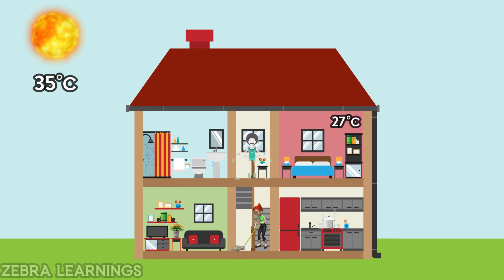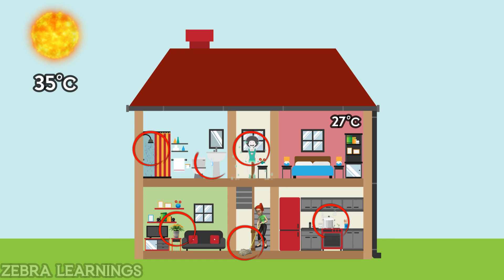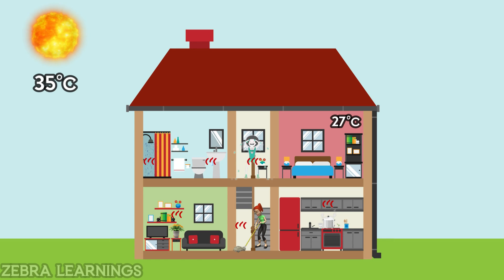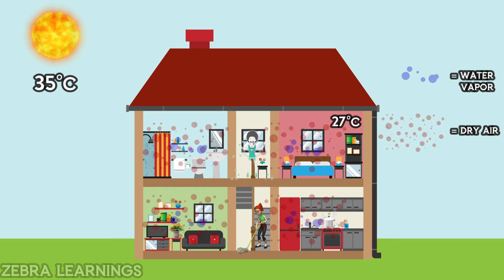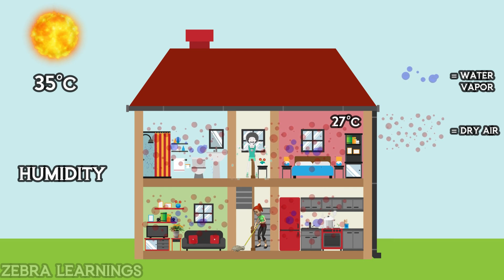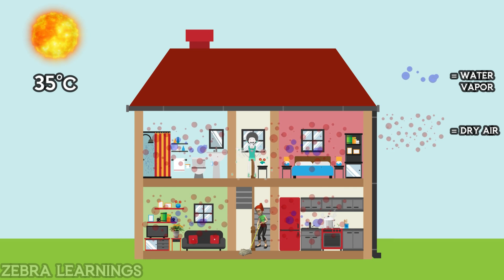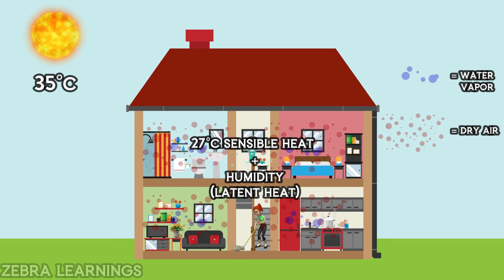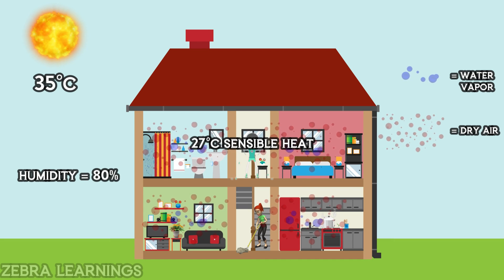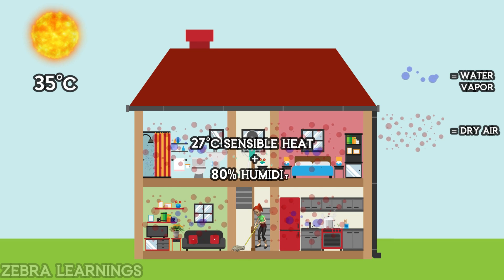In our house, water from sources like cooking, bathing, sweating, cleaning, plants, and water leaks will use the surrounding heat as latent heat and evaporate, mixing with the dry air inside the house. The water vapor mixed with dry air is called humidity. This humidity is measured as a percentage. Now the house has both 27 degrees Celsius sensible heat and humidity — that means latent heat. Let's say the humidity is 80%, so sensible heat is 27 degrees Celsius and humidity is 80%.